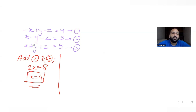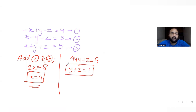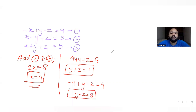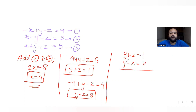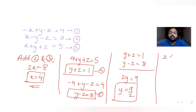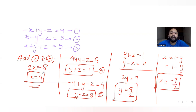Substituting x=4 into equation 3: 4+y+z=5, so y+z=1 (equation 4). Substituting x=4 into equation 1: −4+y−z=4, so y−z=8 (equation 5). Adding equations 4 and 5: 2y=9, so y=9/2. Then z = 1−y = 1−9/2 = −7/2.